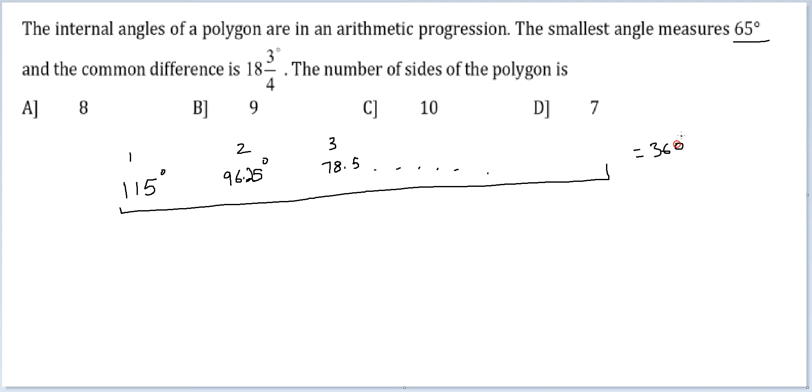So let's write this down: 360 equals n/2 times [2 times 115 plus (n-1) times 75/4]. Using the arithmetic series formula: 2a plus (n-1)d - yes, this will be the expression.